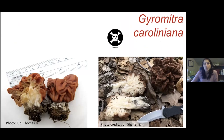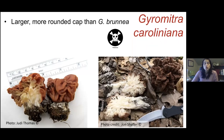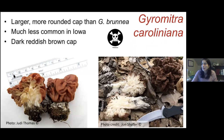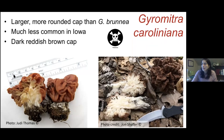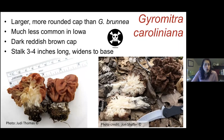Another Gyromitra is Gyromitra caroliniana — larger with a more rounded cap than Gyromitra brunea, much less common in Iowa. The cap is dark reddish to brown. The stem is not hollow — it has strange chambers. The cap also has locules; there's nothing hollow the way we expect in true morels. The stalk can be three to four inches long and widens at the base.